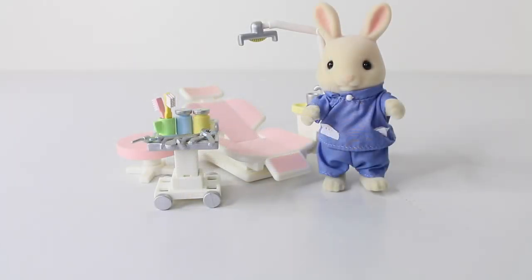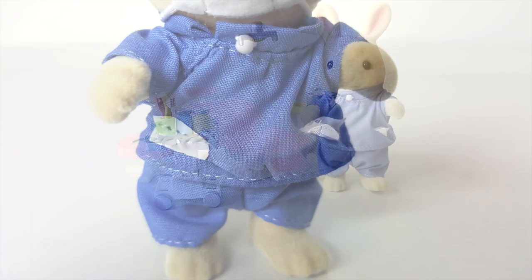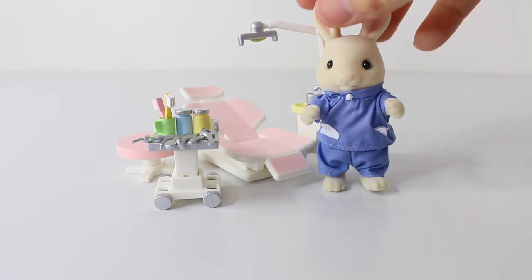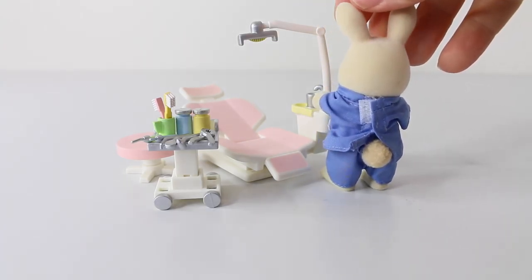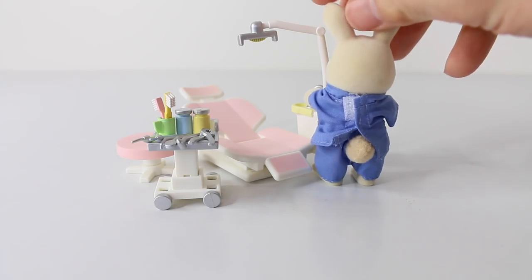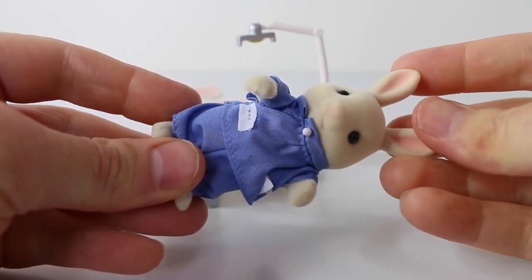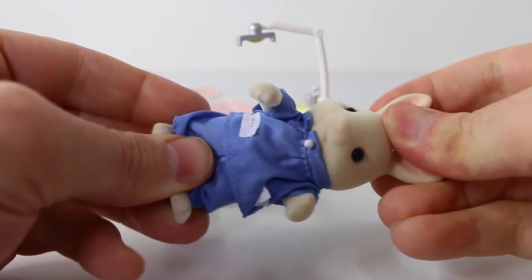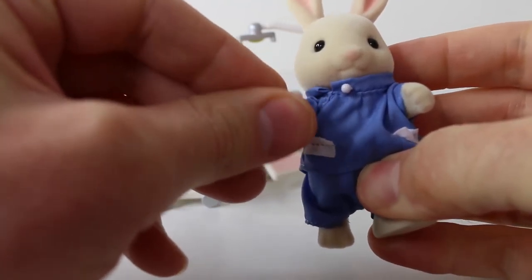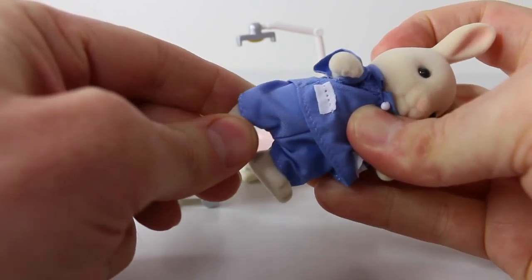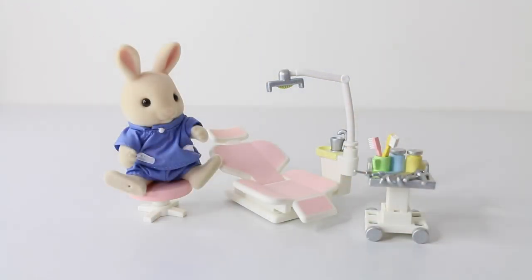And this is our cute bunny dentist. And he's wearing his blue outfit with white pockets. And it has a little button at the top. And from the back it's velcroed so you can easily take it off and on. And our bunny also has five points of articulation including his head, his arms, and his legs. And with his legs being poseable he can easily sit on the stool. And he's ready to see his first patient.